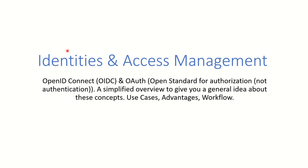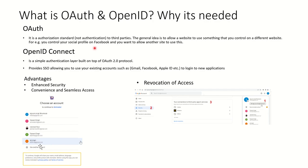OAuth is an authorization standard. It allows a website to use something that you control on a different website. For example, you control your social profile on Facebook and you want to allow another site to use it — this happens using OAuth. Another example would be signing up to LinkedIn using your Gmail ID, where Google is your identity provider.